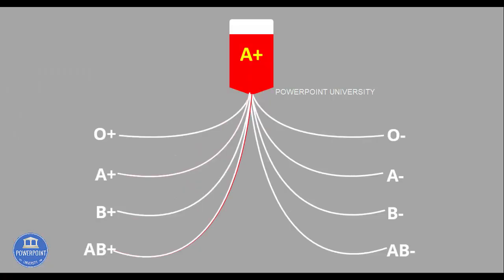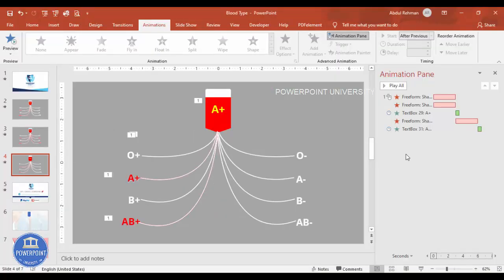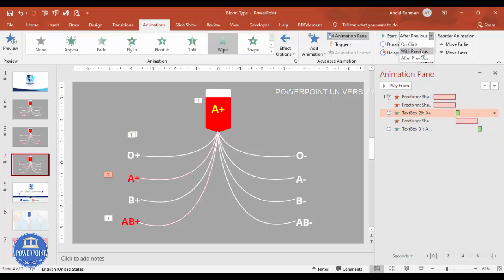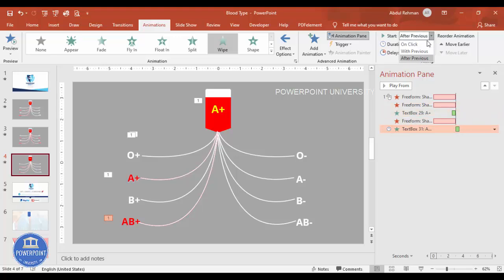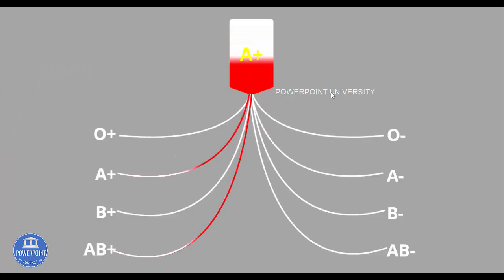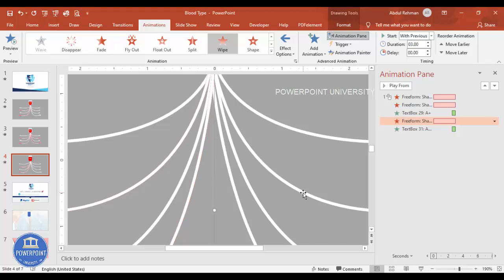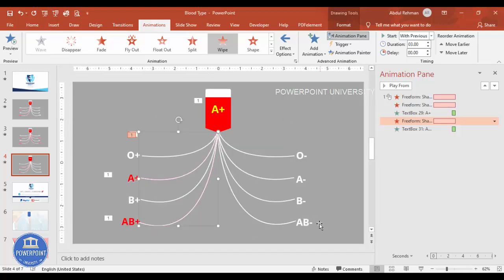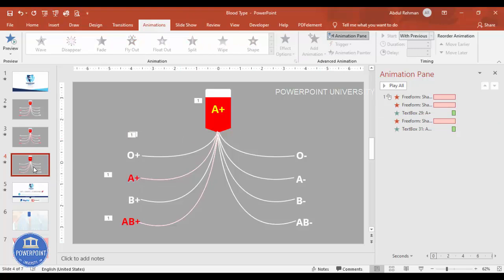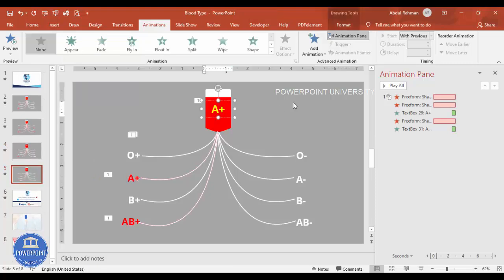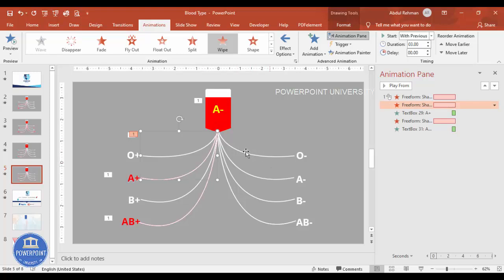Play the animation to check — make sure all lines and labels are set to With Previous with appropriate delays so they animate together correctly. Adjust alignment so the red elements are properly hidden beneath their white counterparts. Once the A positive slide is complete, to create the A negative slide simply duplicate the slide, change the blood pouch label to A negative, then add the appropriate red and white lines for A negative's compatible blood types — A positive, A negative, AB positive, and AB negative — and apply the same animation effect.